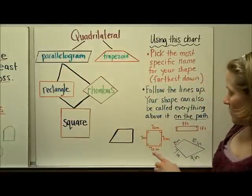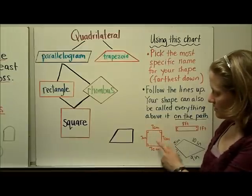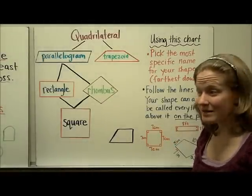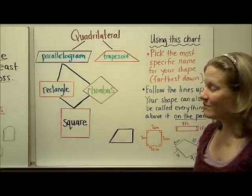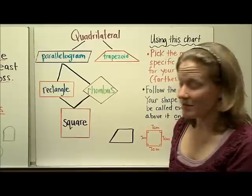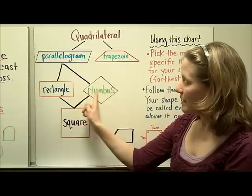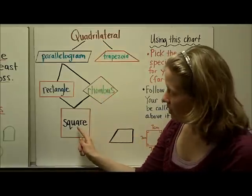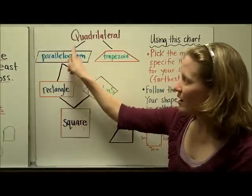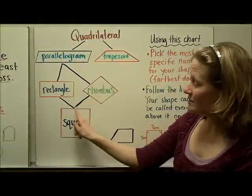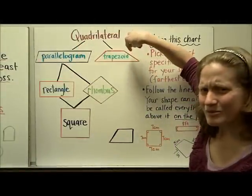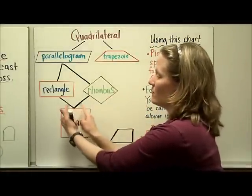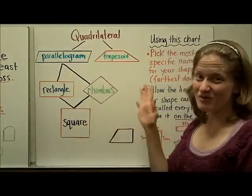Let's do a harder one. This shape has little boxes in each corner showing four right angles, and each side is labeled seven centimeters — all sides are equal with right angles, so it must be a square. Following the chart up, I can also name it a rhombus, a parallelogram, a rectangle, and a quadrilateral. It's not a trapezoid because it has more than one set of parallel sides. So a square is also a rhombus, rectangle, parallelogram, and quadrilateral.